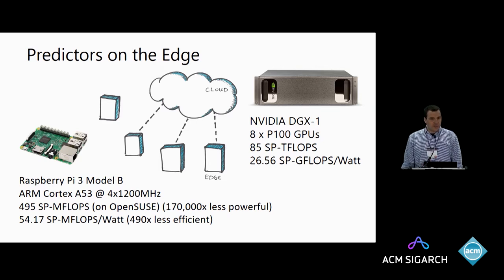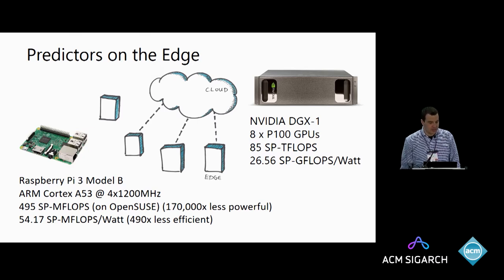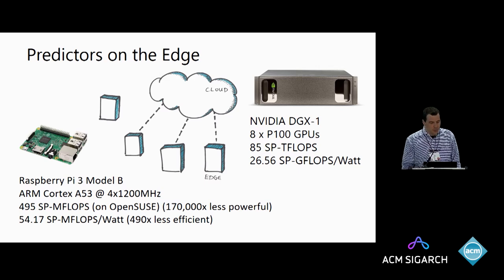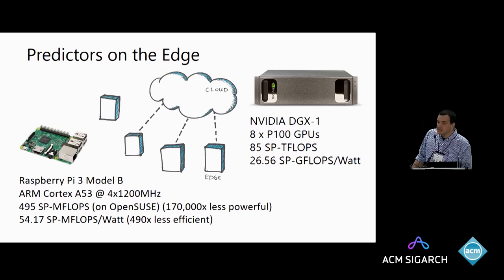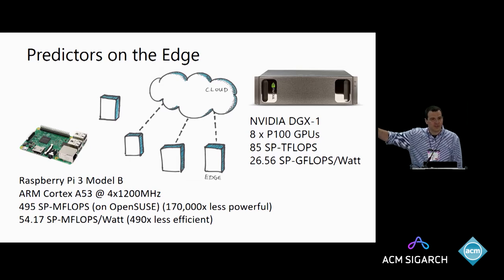If you put a good operating system on the Raspberry Pi, you'll get about half a gigaflops in single precision — more than 100,000 times less powerful than the computer in the cloud. Moreover, the power efficiency is much worse, about 500x less power efficient than what you get in the cloud. So this talk is about how do we take AI and machine learning and move it from the powerful machines in the cloud to these really resource-impoverished devices on the edge.